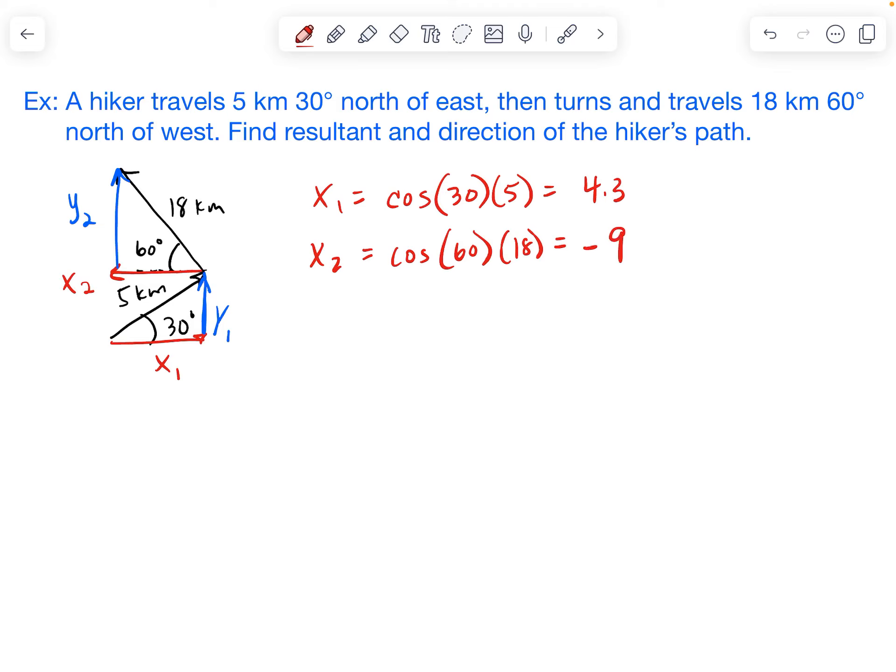But we're going to make it negative. And the reason why we have to make this negative is because it's going left. Generally, if something is going left, we're going to make it negative. And that's because it's opposing x1, which is going right.